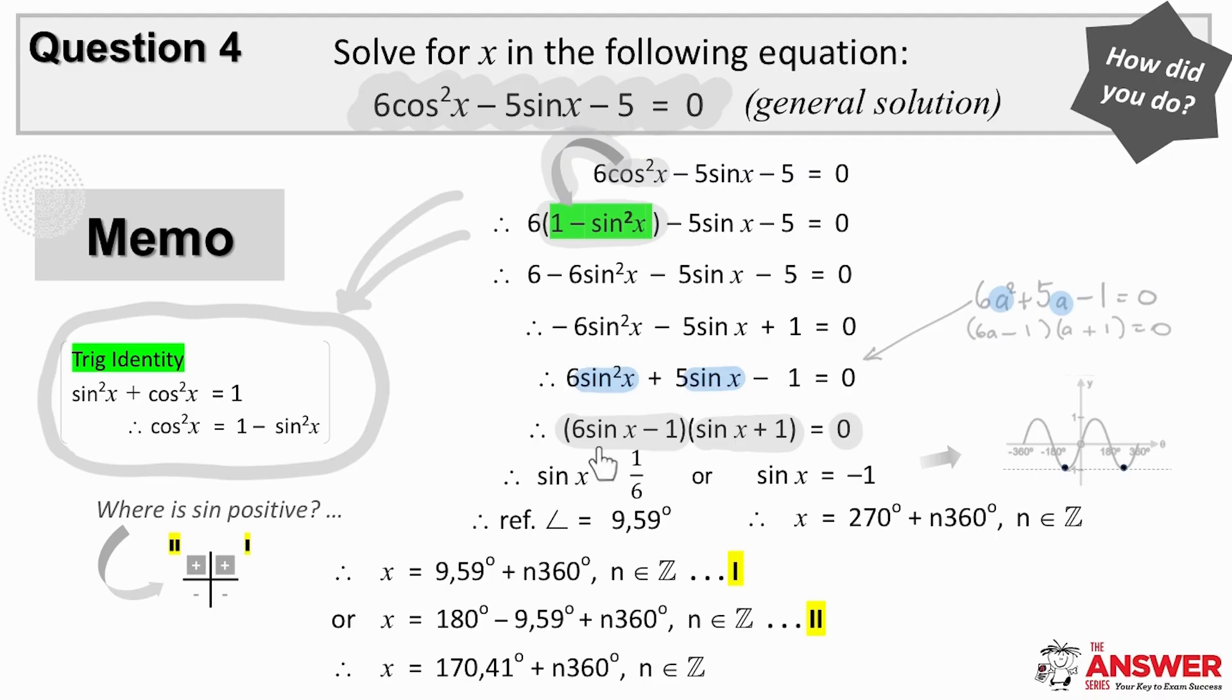From the first, we therefore get that sine of x is 1 over 6. Are you able to identify which type of equation this is? And from the other bracket, we get that sine of x is minus 1.